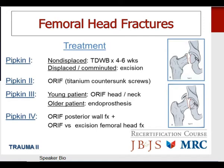Pipkin III is a Pipkin I or II in association with a femoral neck fracture. In a young functional patient, open reduction and internal fixation of both head and neck fractures is indicated; in an older patient, prosthetic replacement of the proximal femur is appropriate. The Pipkin IV fracture is a Pipkin I or II femoral head fracture with an associated posterior wall acetabular fracture. Treatment is to fix or excise the femoral head fragment and repair the posterior wall fracture — the ideal indication for the transtrochanteric approach.